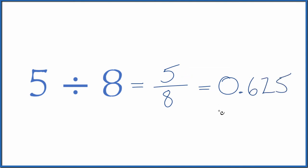And these are all equal. Five eighths, that's equal to 0.625. And both are equal to five divided by eight.